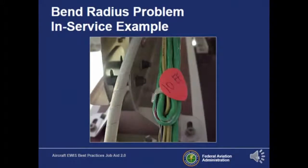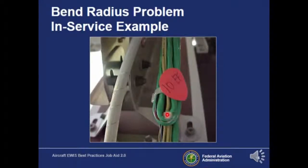Here's an example of bend radius problems. Notice how big this wire is and how small the bend radius is — it's basically folded in half. You want to prevent this type of bend because it could cause breakage.